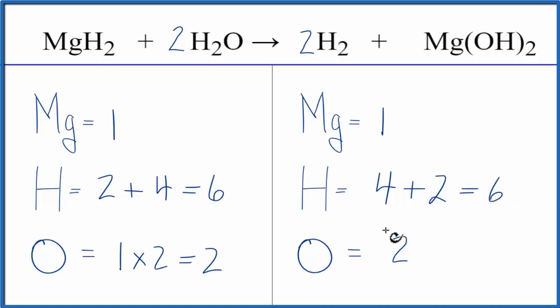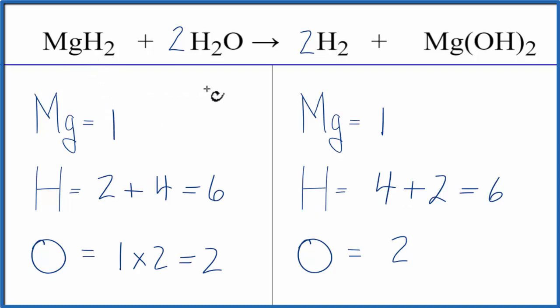Now everything's the same on both sides of the equation and we're done. This equation is balanced. This is Dr. B with the balanced equation for MgH₂ plus H₂O. Thanks for watching.